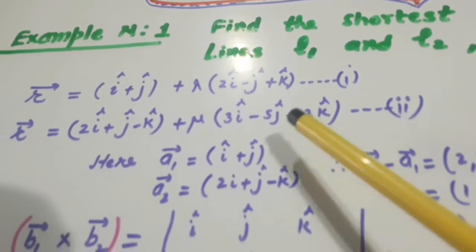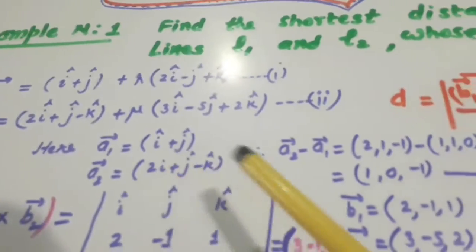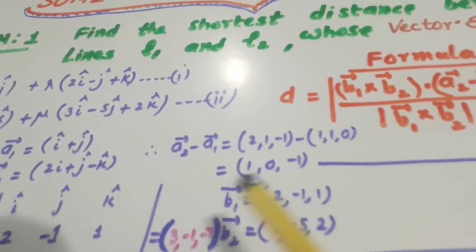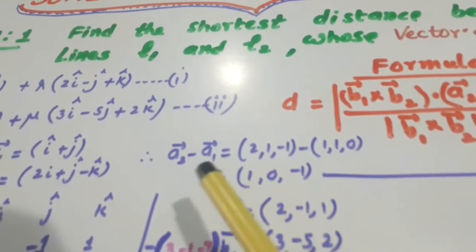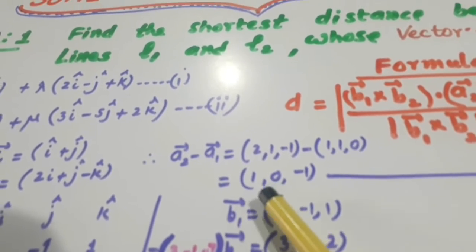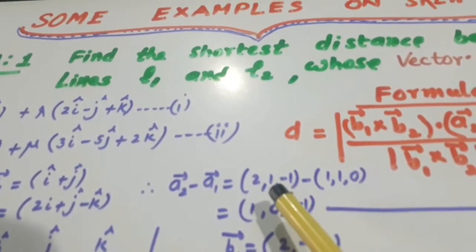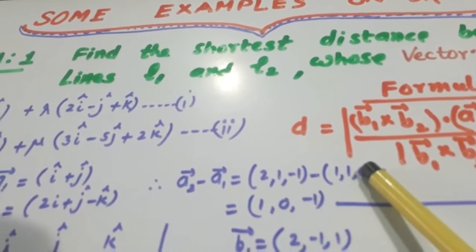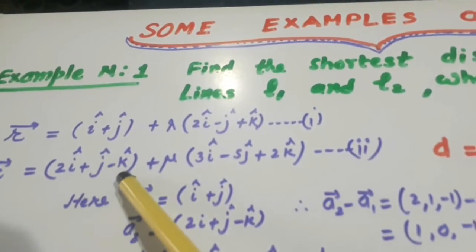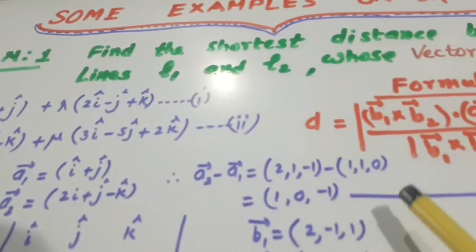Write them. Find A2 minus A1. Here I have calculated A2 minus A1 comes 1, 0, minus 1. Look here, this is A2 and this is A1. I have subtracted it and I have got 1, 0, minus 1.